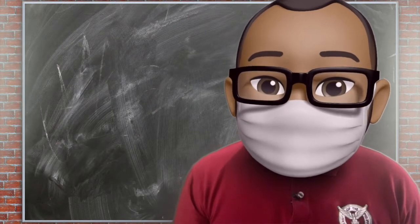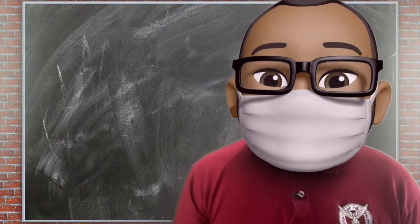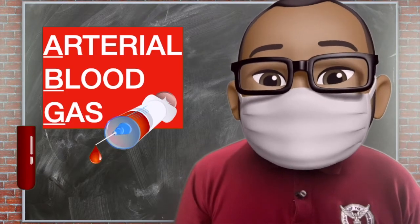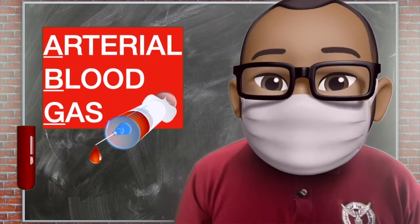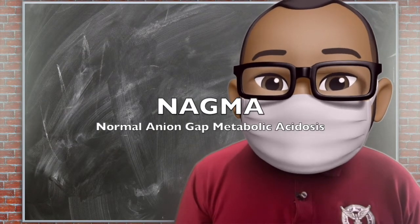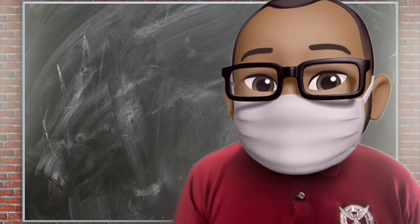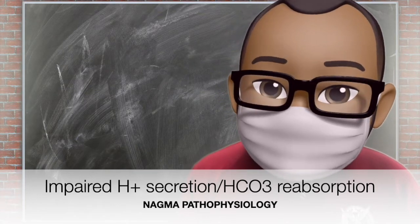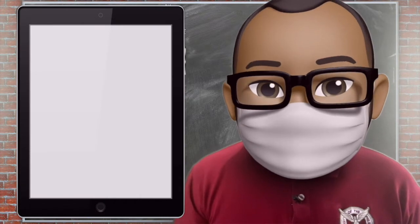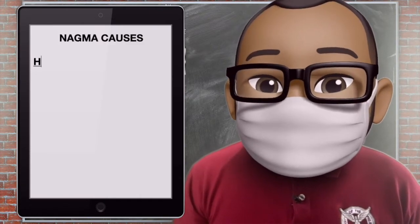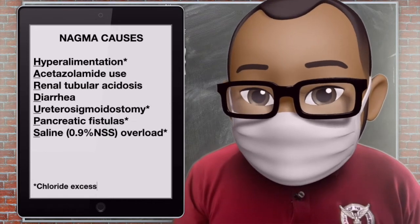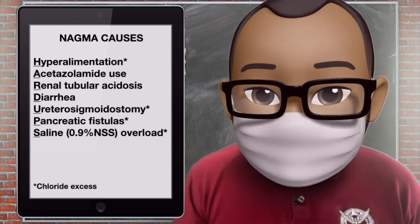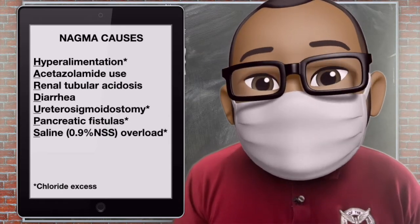How would I know that a body is losing bicarbonate? We do a very good history. Usually, they have diarrhea or polyuria. Then we request for a blood gas and check for NAGMA, or Normal Anion Gap Metabolic Acidosis. NAGMA means that the acidemia is due either from failure to secrete hydrogen ions or reabsorption of bicarbonate. The acronym HARD UPS stands for: Hyperalimentation, Acetazolamide use, Renal tubular acidosis, Diarrhea, Ureterosigmoidostomy, Pancreatic fistula, or 0.9 normal saline solution overload. These conditions require bicarbonate therapy.